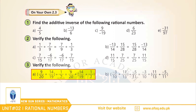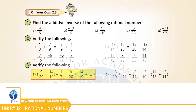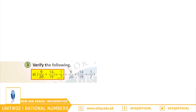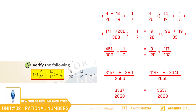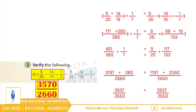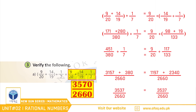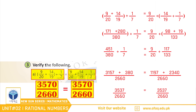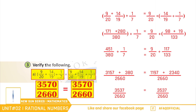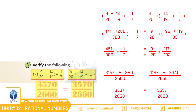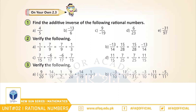Question 3: Verify the following. (a) 9/20 + (14/19 + 1/7) = (9/20 + 14/19) + 1/7. بچو left hand side پر ہمارے پاس جو fraction آ رہا ہے وہ ہے 3537/2660، اور یہی fraction ہمارے ساتھ right hand side پر بھی آ رہا ہے۔ اس طرح سے left hand side equals right hand side اور اسی طرح ہمارے ساتھ associative law verify ہوا۔ بچو باقی parts آپ نے خود حل کرنے ہیں۔ Good, you have done a great job بچو!